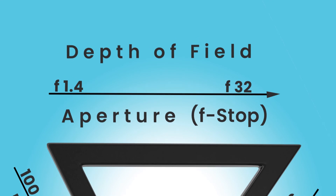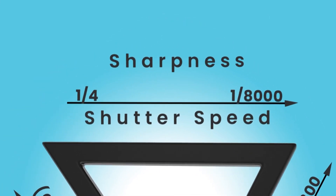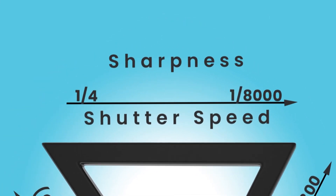Shutter speed decides the time and duration for which the light can enter. It also makes the image sharp or blurred depending on the speed.